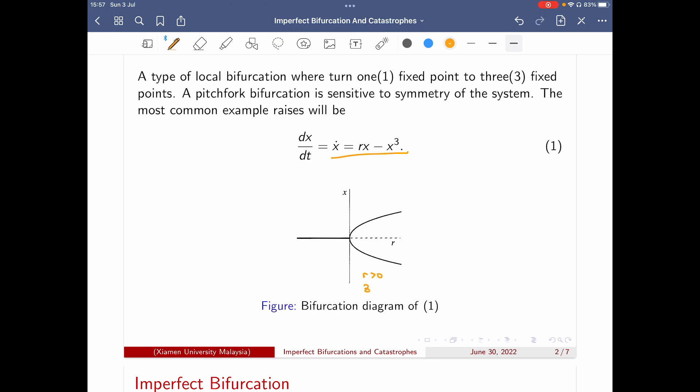When r is larger than zero, there would be three fixed points. And when r is less than zero, there is only one fixed point.